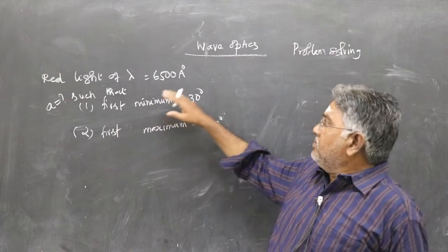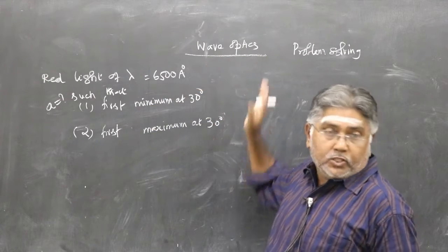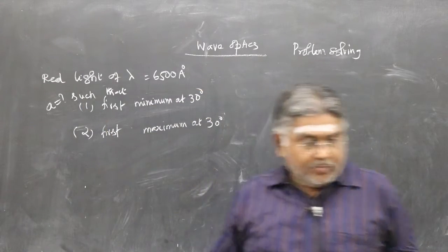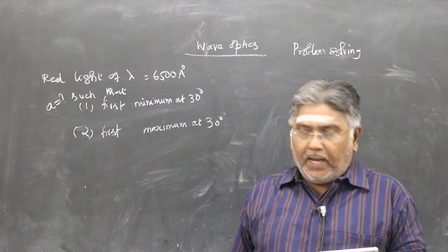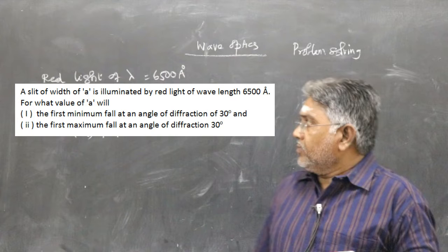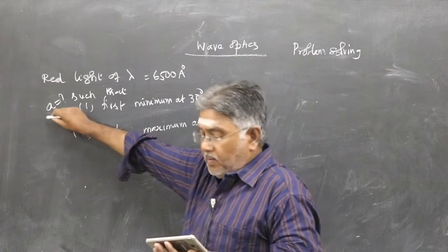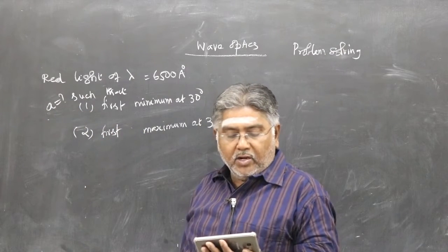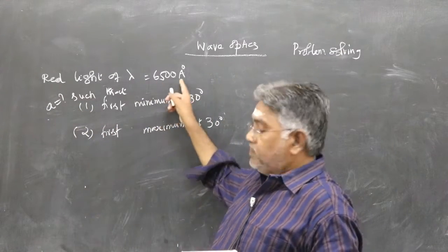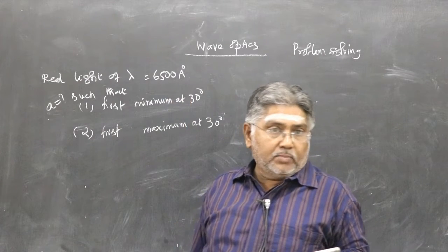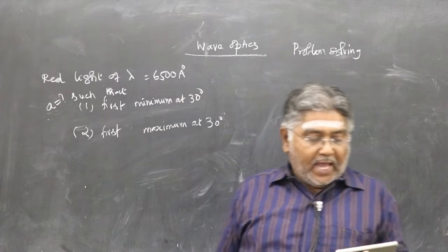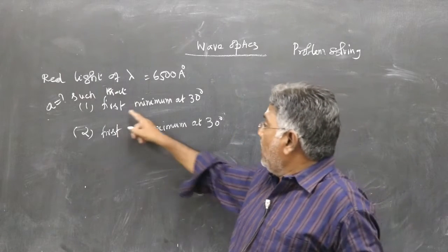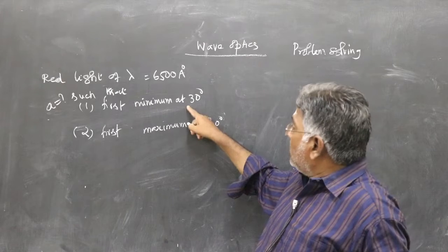This is a problem in chapter wave optics. A slit of width A is illuminated by red light of wavelength 6500 angstrom. You should know 1 angstrom is 10 to the power of minus 10 meter. For what value of A will the first minimum fall at 30 degrees?